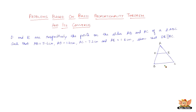What we are basically looking at here is the converse of the basic proportionality theorem. The usual basic proportionality theorem states that if a line is parallel to a side of a triangle, then the other two sides will be divided by that line in equal ratio. Since we now have the lengths of AD, AE, and AC, we just have to prove that AD by DB equals AE by EC.